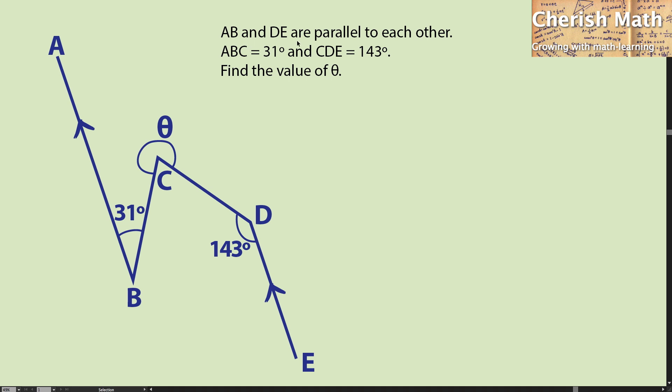AB and DE are parallel to each other. The angle ABC is equal to 31 degrees and angle CDE is equal to 143 degrees. Find the value of theta.